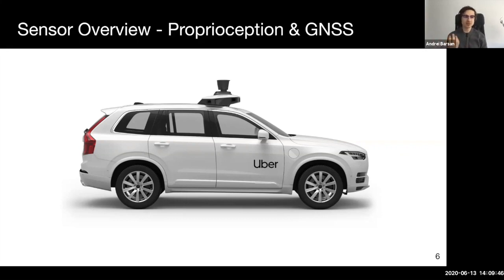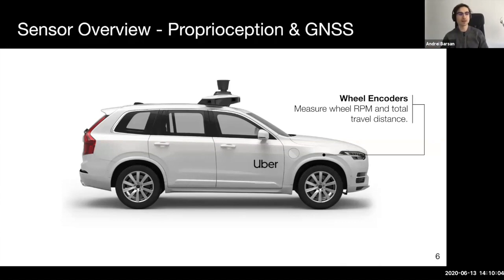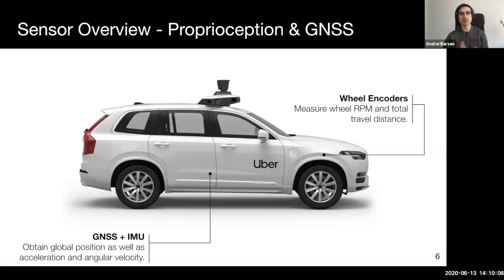So the sensors which perceive the vehicle's internal state are called proprioceptive. And these sensors have been common in non-autonomous driving for many decades and they include things such as wheel encoders and accelerometers and so on. And these sensors are also used in autonomous driving. So here wheel encoders for example are used together with an inertial measurement system as well as the GNSS or Global Navigation Satellite System to produce coarse estimate of the vehicle pose. So let's now take a closer look at each of these sensors.